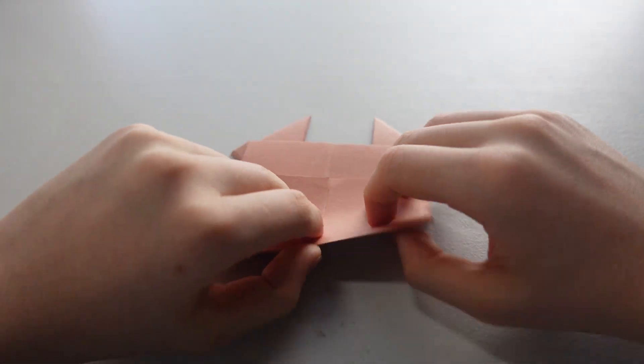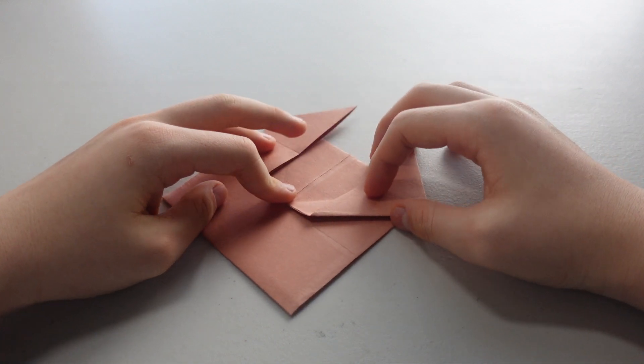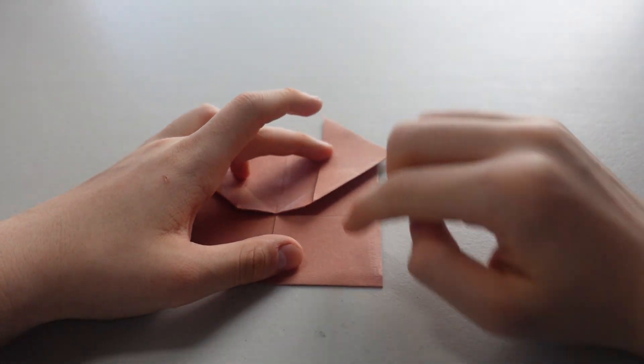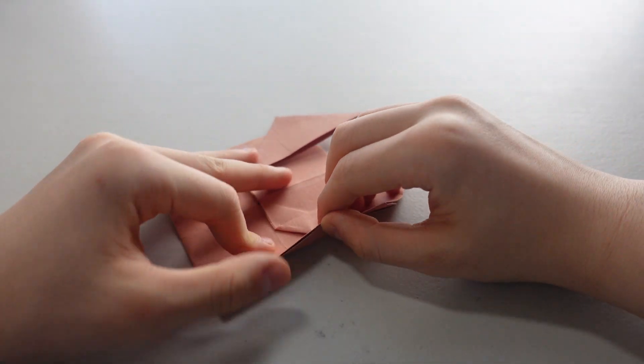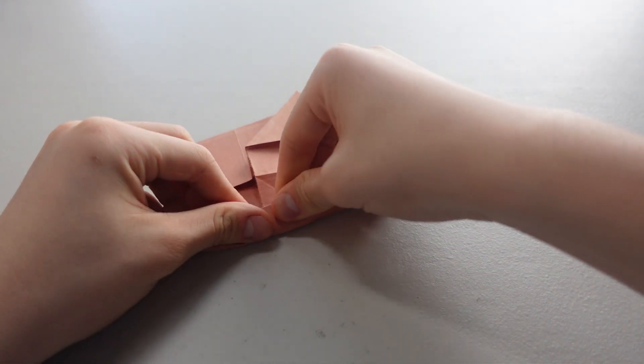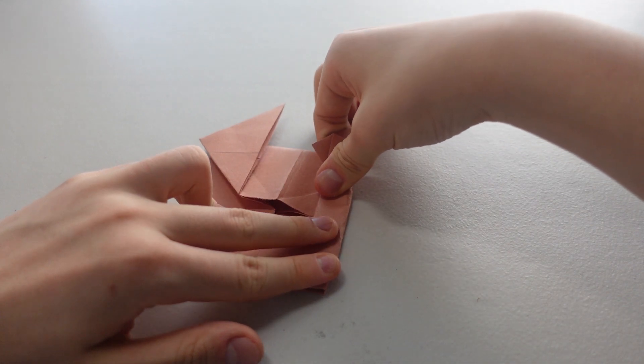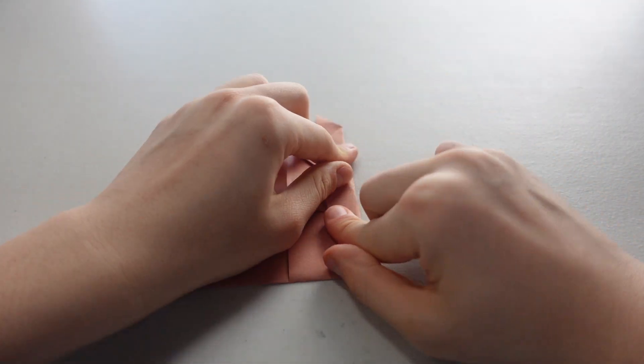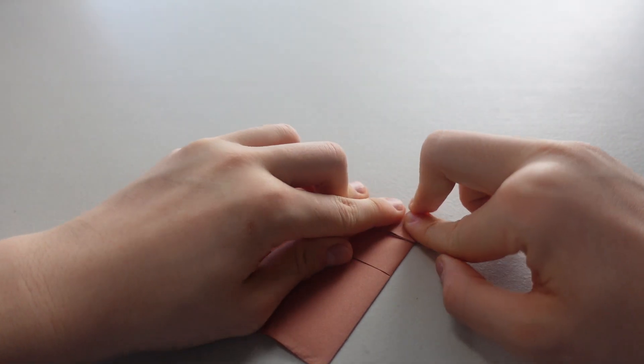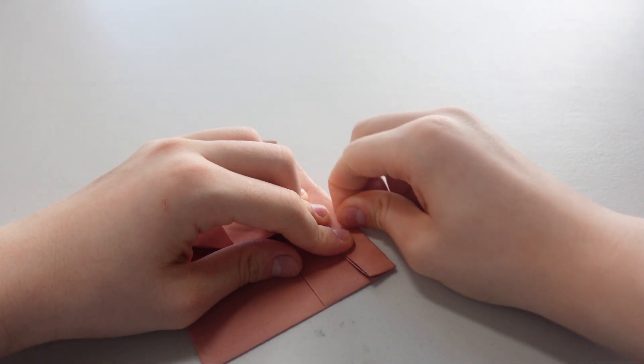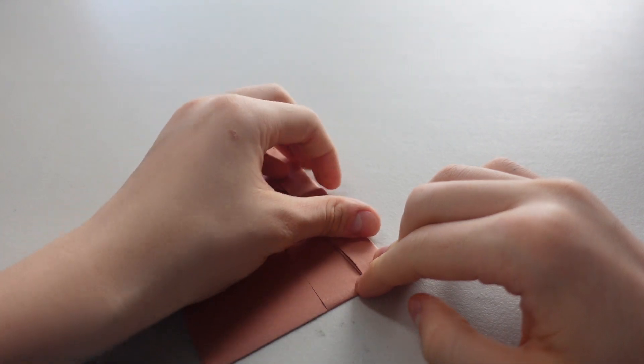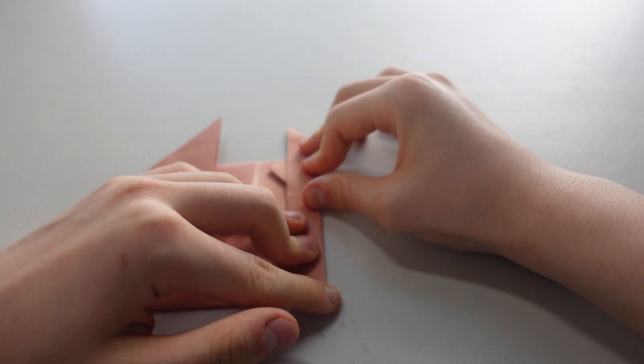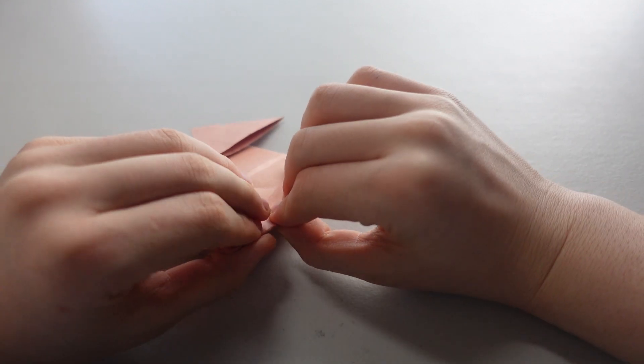So we have this. We're going to flip it over. We're going to fold this part so that this edge matches with this edge. Let's see. I'm using pretty thick paper, so it looks kind of hard. But if you're using origami paper, it should be real easy. Oh boy, yeah, this is really thick paper.